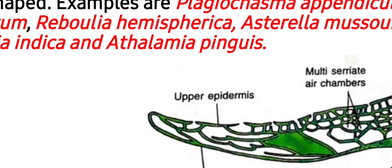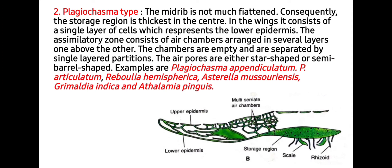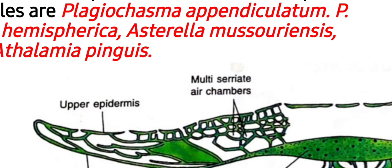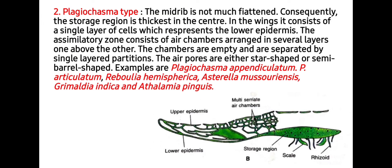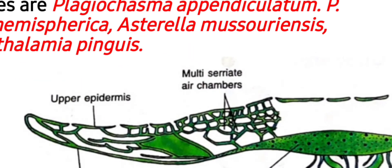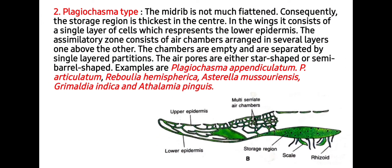At the wings you will find only a single layer of cells representing the lower epidermis. The assimilatory zone consists of air chambers arranged in several layers one above the other, distinguishing it from the Marchantia type which has a single-layered air chamber. The chambers are empty and separated by single-layered partitions. In Marchantia type, photosynthetic lamellae are present in the chamber, while here chambers are empty. The air pores are either star-shaped or semi-barrel-shaped. Examples include Plagiochasma appendiculatum, Plagiochasma articulatum, Reboulia hemisphaerica, Astrella mucronensis, Grimaldia indica, and Athalamia pinguicula.